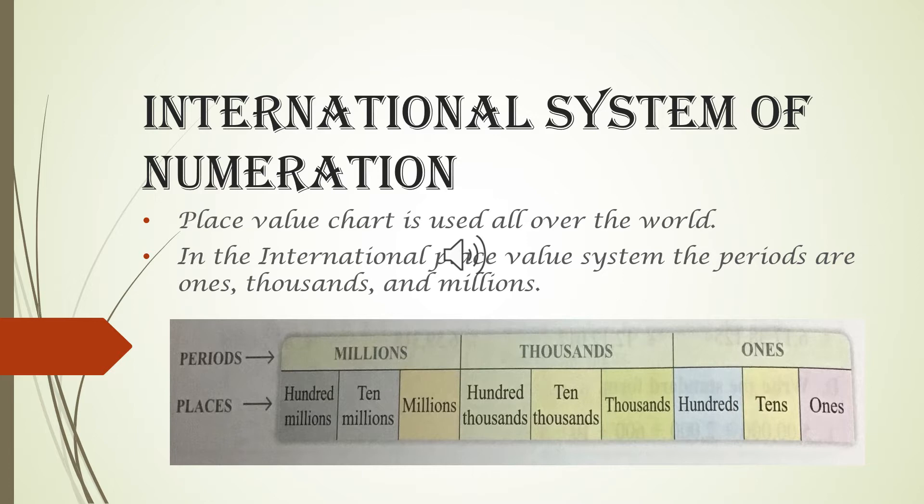The thousands period consists of thousands, tens thousands and hundreds thousands. And millions period consists of millions, tens millions and hundreds millions.